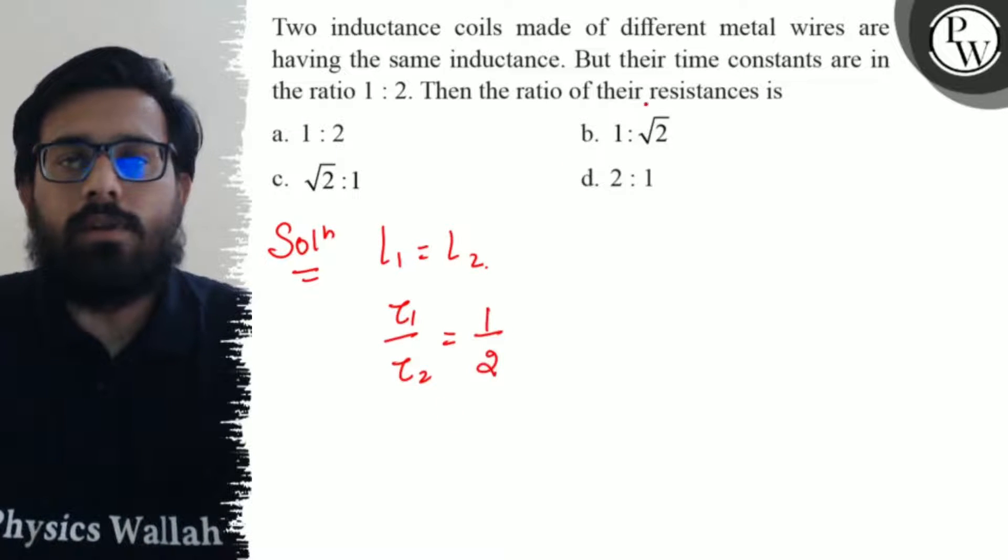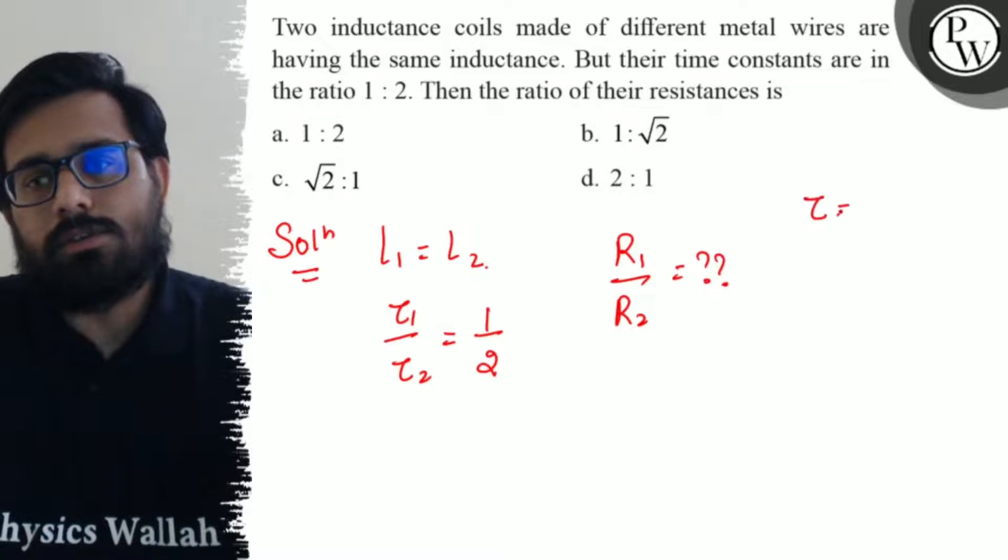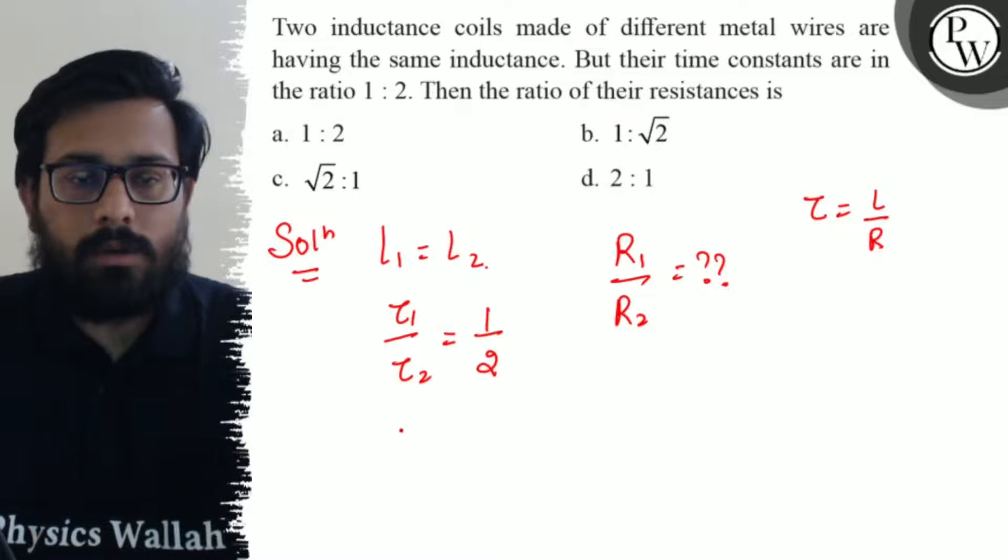We have to calculate the ratio of their resistances, R₁/R₂. Now we all know that τ = L/R, so τ₁/τ₂ can be written as R₂/R₁.